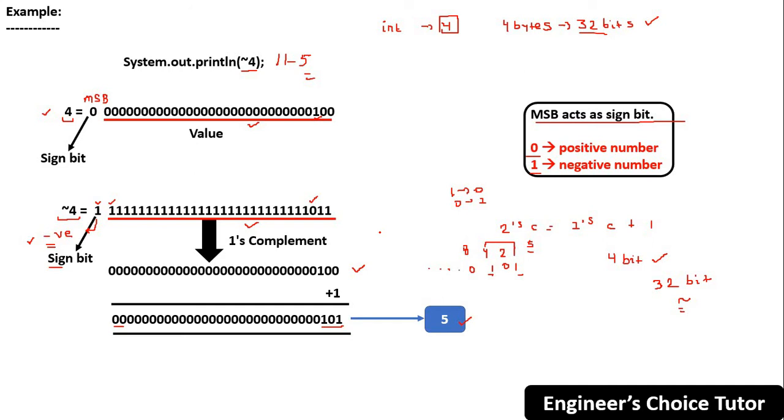And one shortcut is there, one shortcut representation or formula. Negation of x is equal to minus of x plus 1. For example, let's apply in this case. What were you trying to calculate? Negation of 4, the complement of 4, by the help of bitwise complement operator. So the formula is minus x. In the place of x, 4 is present. So minus 4 plus 1, which is minus 5. That's what you got after doing all this operation. So this is a shortcut formula you should remember. It is easy for you to understand and to get the output. This is all about the bitwise complement operator in Java.